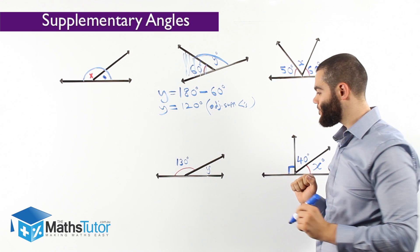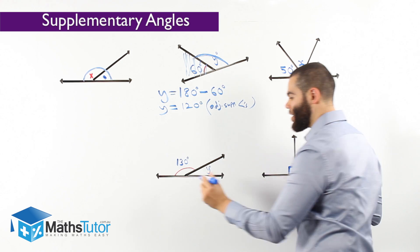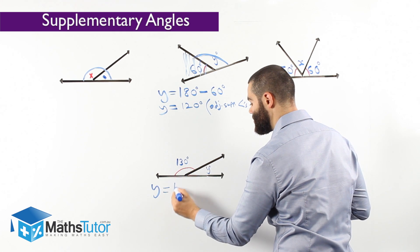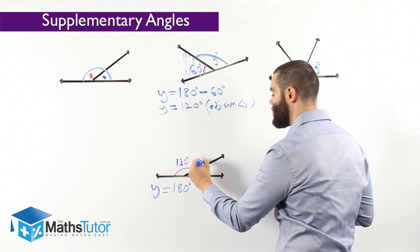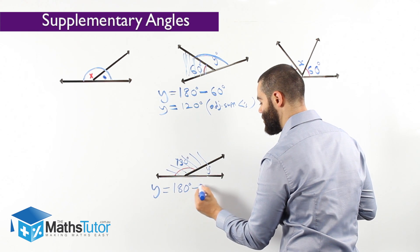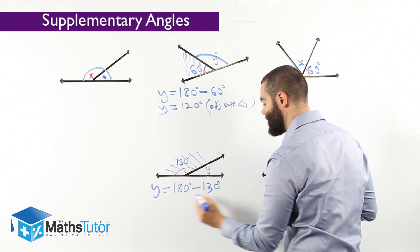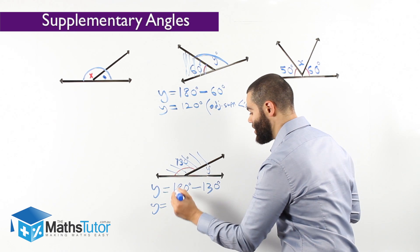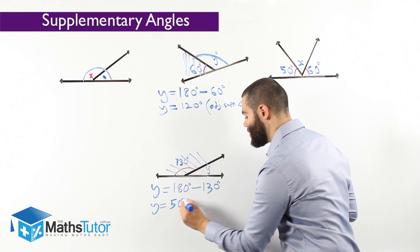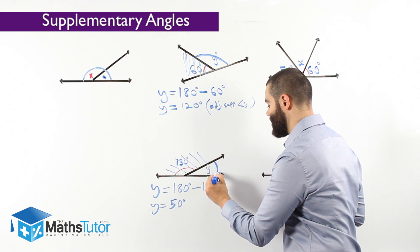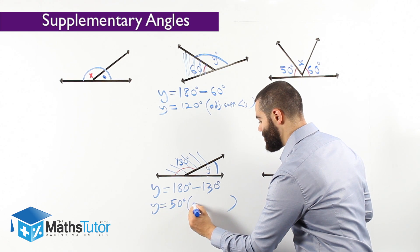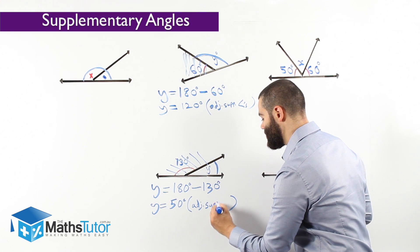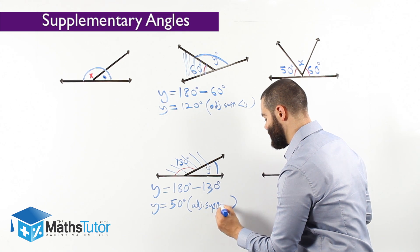Another example. We're going to write y equals 180 degrees — the total — minus 130 degrees. We're going to be left with y. So y is 180 take away 130. Y must be 50 degrees. This here is 50 degrees. Our reason: adjacent supplementary angles.